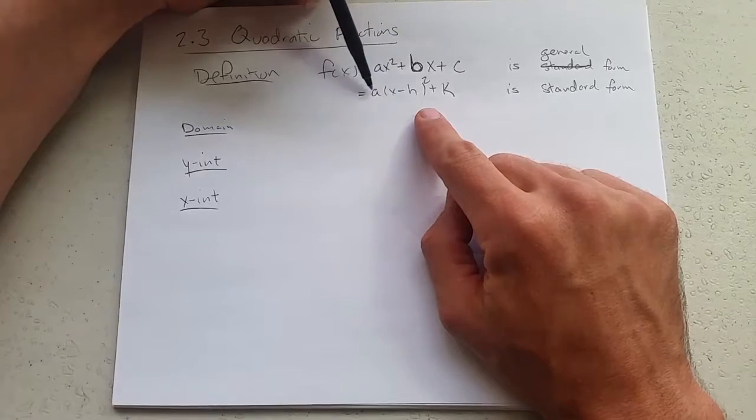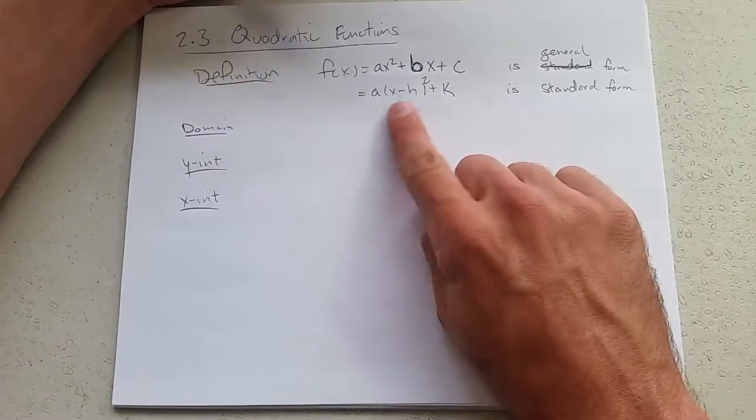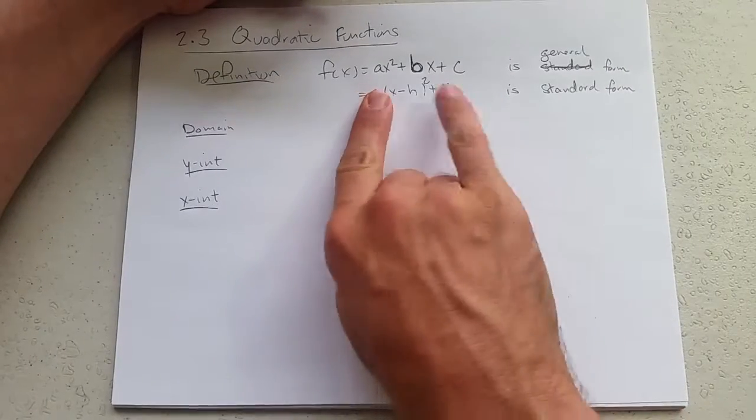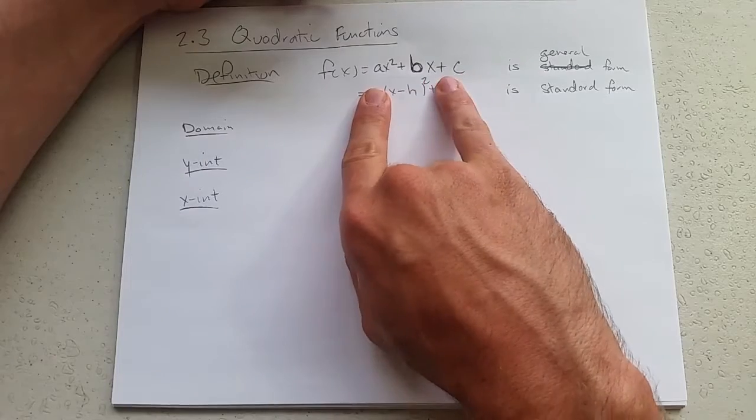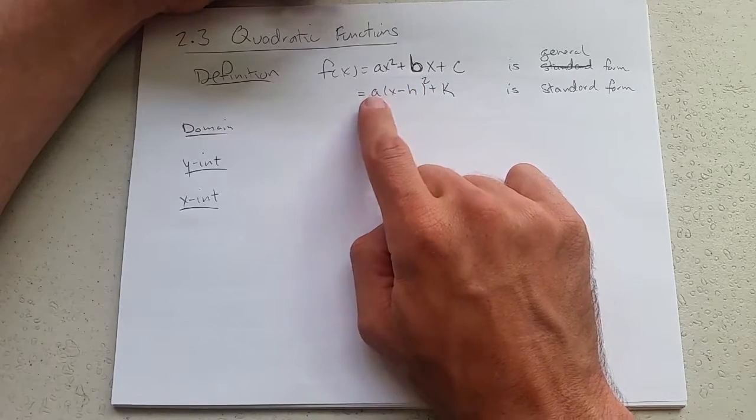Standard form looks like a times (x minus h) squared plus k. There are three transformations here. The base function, if you throw away the a, the h, and the k, the base function is x squared. We have a vertical stretch, a horizontal shift to the right h, and up k.